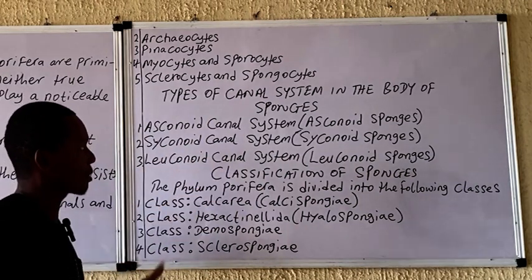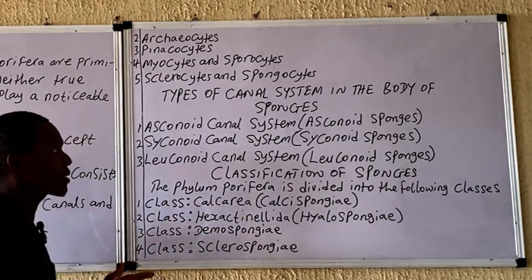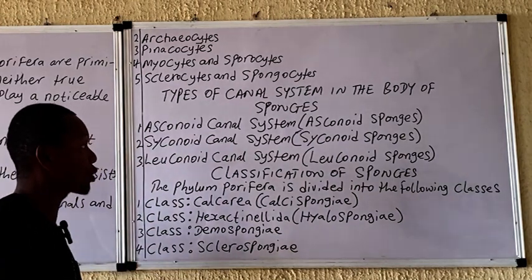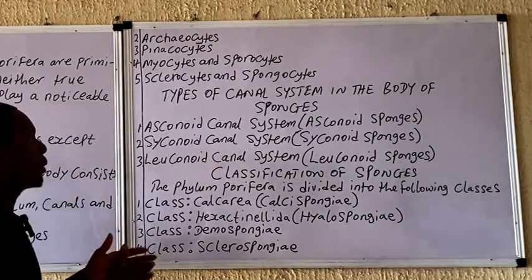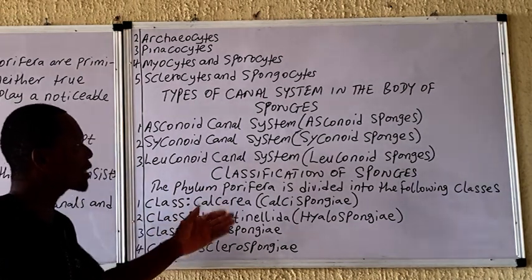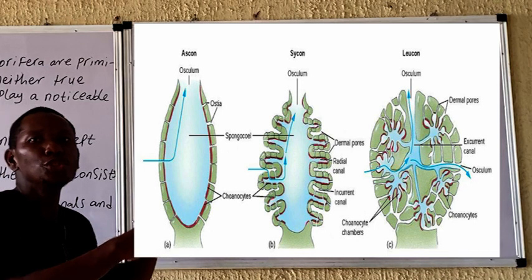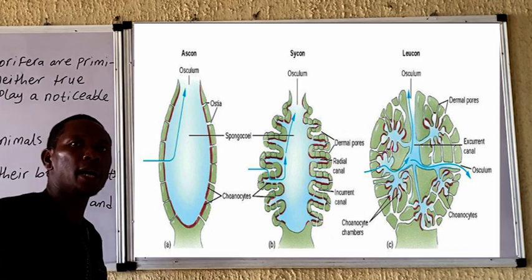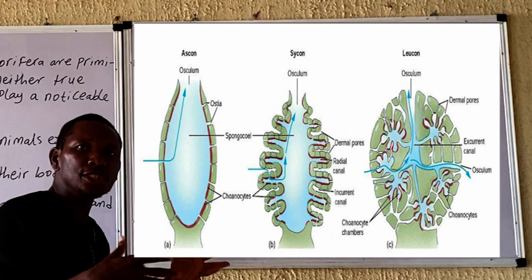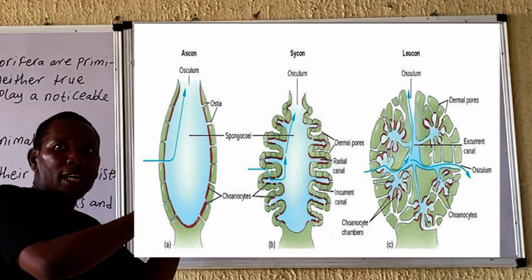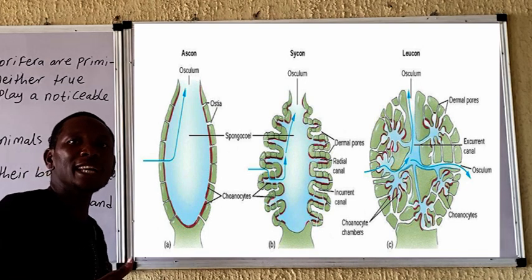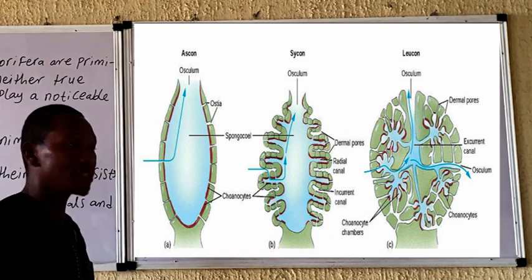Details of these canal systems and how they enable these organisms to survive will be discussed in subsequent videos. The leuconoid canal system has numerous chambers, numerous openings, numerous ostia, and numerous spongocoels. This system actually enables them to increase greatly in size.